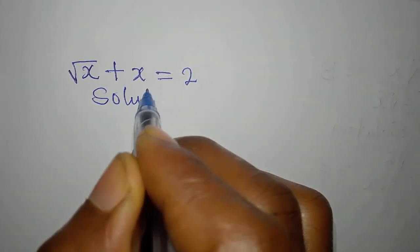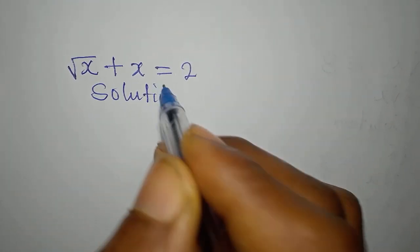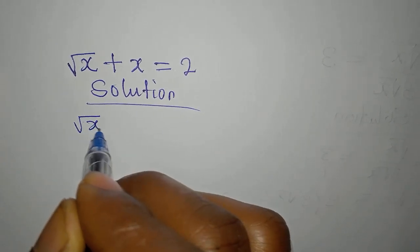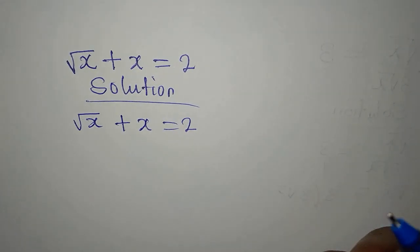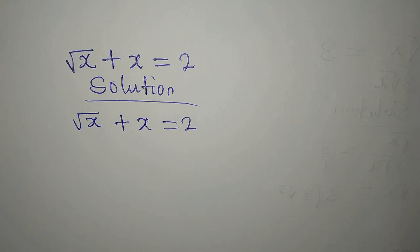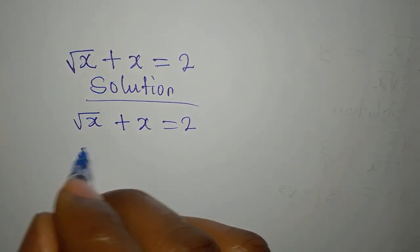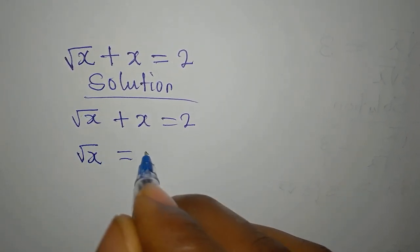Hello everyone, let's deal with this: square root of x plus x equals 2. How do I deal with this? Okay, this is what I want to do: square root of x equals 2 minus x.